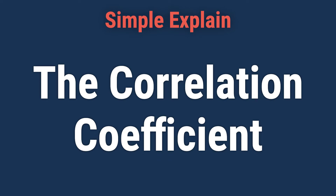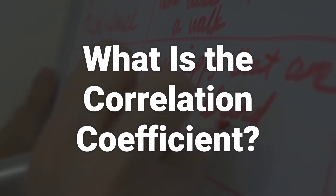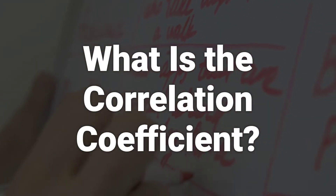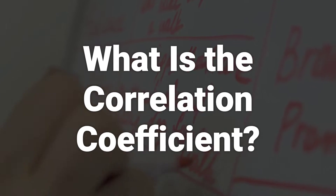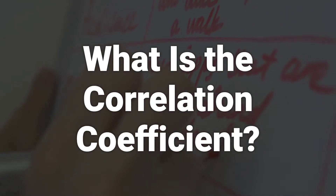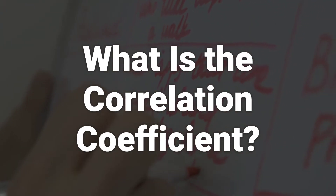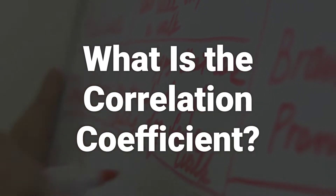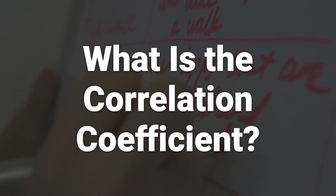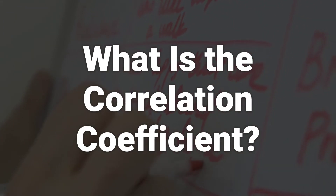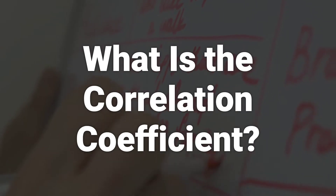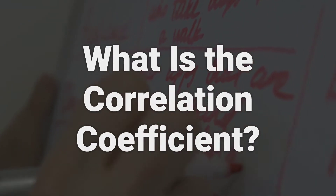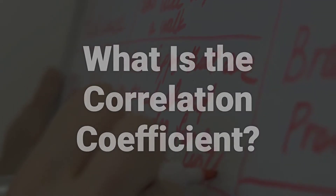Today, we will talk about the correlation coefficient and what it tells investors. The correlation coefficient is a statistical measure of the strength of a linear relationship between two variables, and its values can range from minus 1 to 1. A correlation coefficient of minus 1 describes a perfect negative correlation, while 1 shows a perfect positive correlation. A correlation coefficient of 0 means there is no linear relationship.